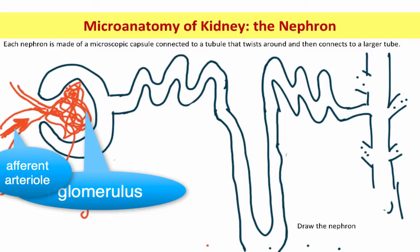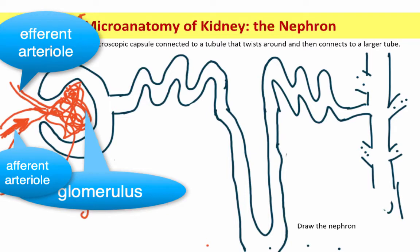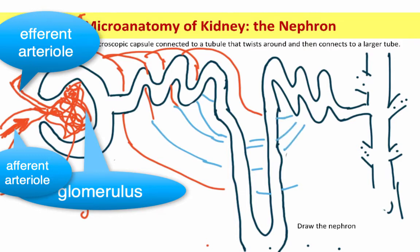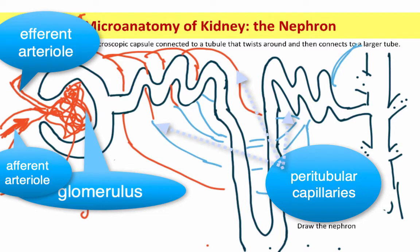Red means oxygen-rich blood. The word efferent in the context of the nervous system means the outgoing information — the motor side is referred to as the efferent pathway. Here we have an efferent arteriole exiting the glomerular capsule. That then gives rise to a whole bunch of blood vessels that wrap around the tubules of the nephron. These are called the peritubular capillaries — peri means around.